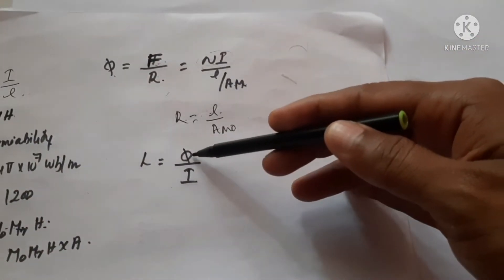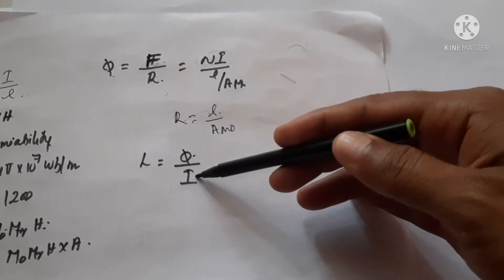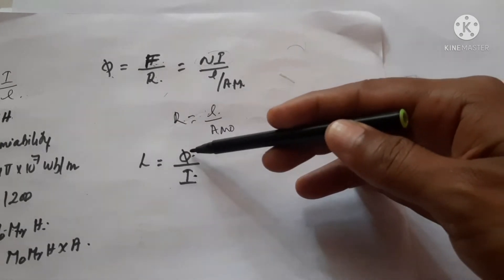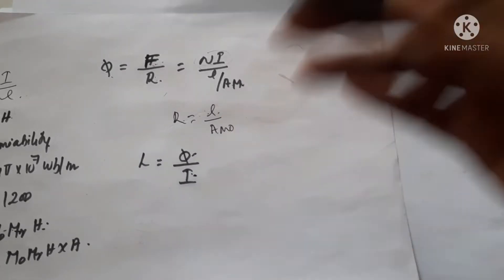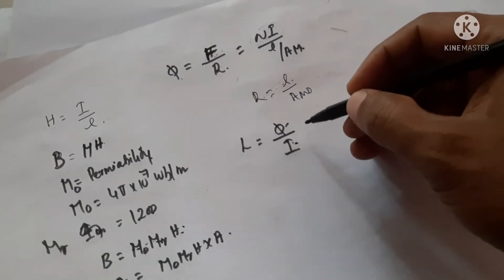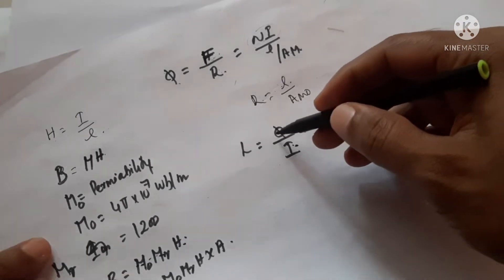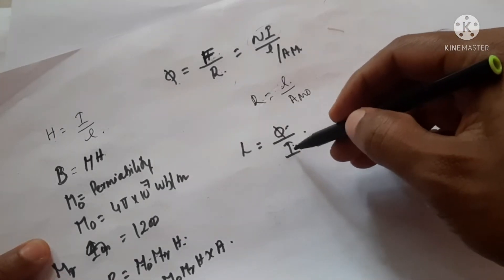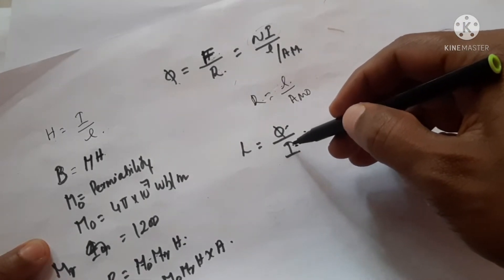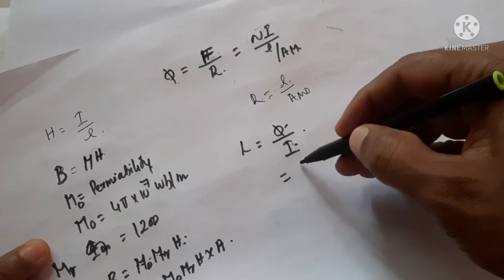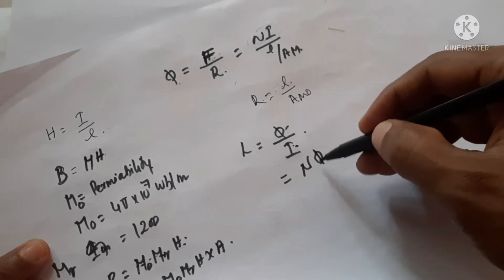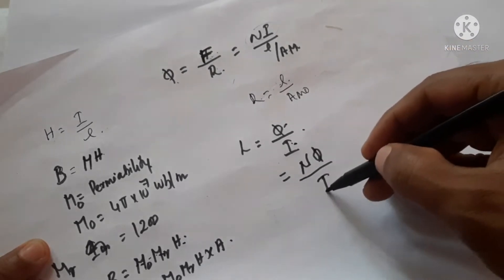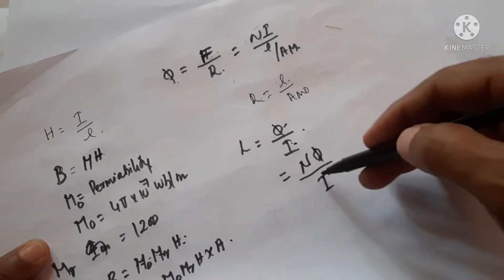Now, what is inductance? Inductance is defined as how much flux is produced due to the flow of a certain current — how much flux is created per unit current. That is called inductance. If there are N number of turns, each coil produces flux due to the current, so the inductance L = Nφ / I.